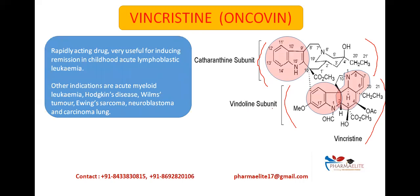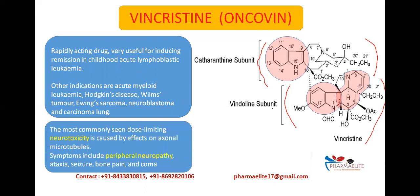Vincristine is a rapidly acting drug and is very useful for inducing remission in childhood acute lymphoblastic leukemia. It can also be used in acute myeloid leukemia, Hodgkin's disease, Wilms tumor, Ewing's sarcoma, neuroblastoma, and carcinoma of the lung. The most commonly seen toxicity of Vincristine is neurotoxicity, which occurs because it affects the axonal microtubules. The main symptoms include peripheral neuropathy, ataxia, seizures, bone pain, and coma — with peripheral neuropathy being the most important.